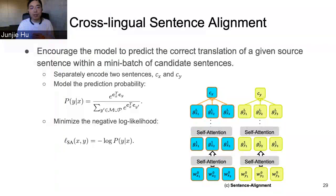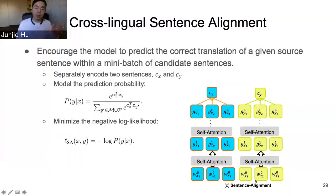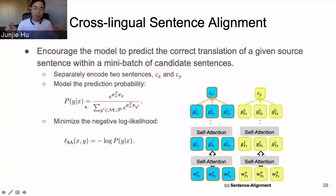For sentence alignment, we want to encourage the model to predict, for a given source sentence, what is the correct translation within a mini-batch of candidate sentences. We use the transformer model but encode the source sentence and target sentence separately, get sentence representations from the top of the transformer layer, and then use negative contrastive loss to predict the correct translation of the source sentence, minimizing this negative log-likelihood objective.